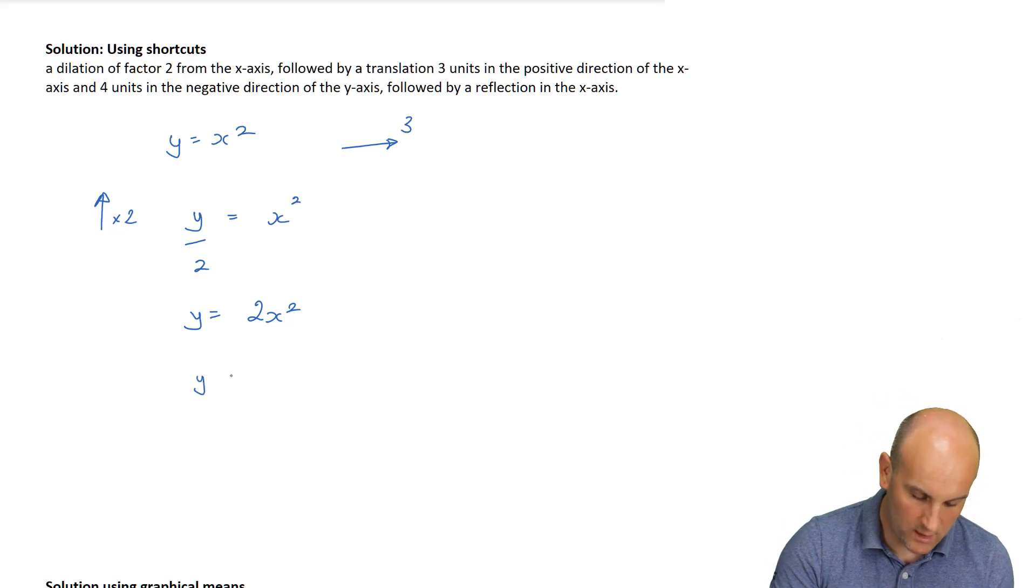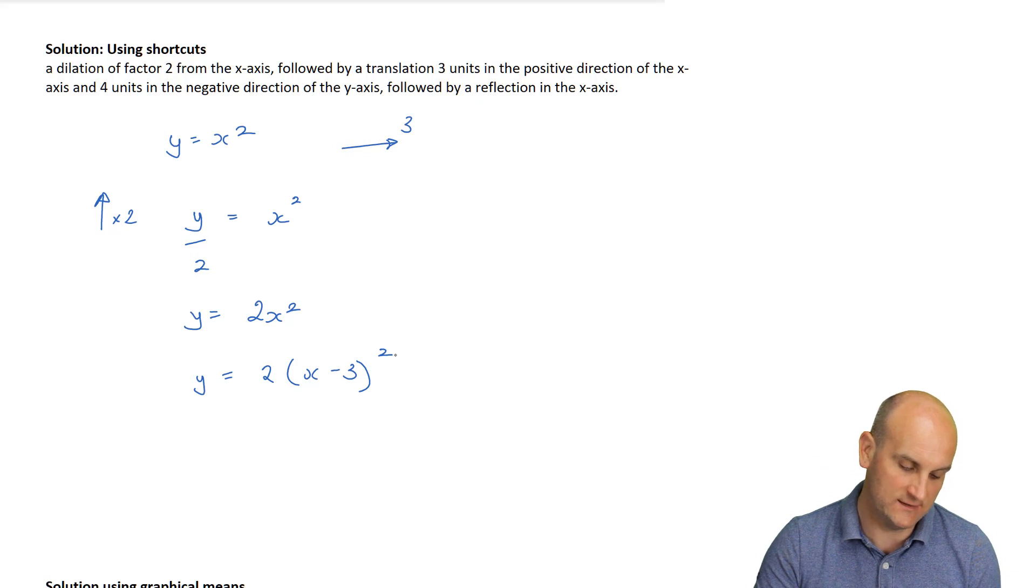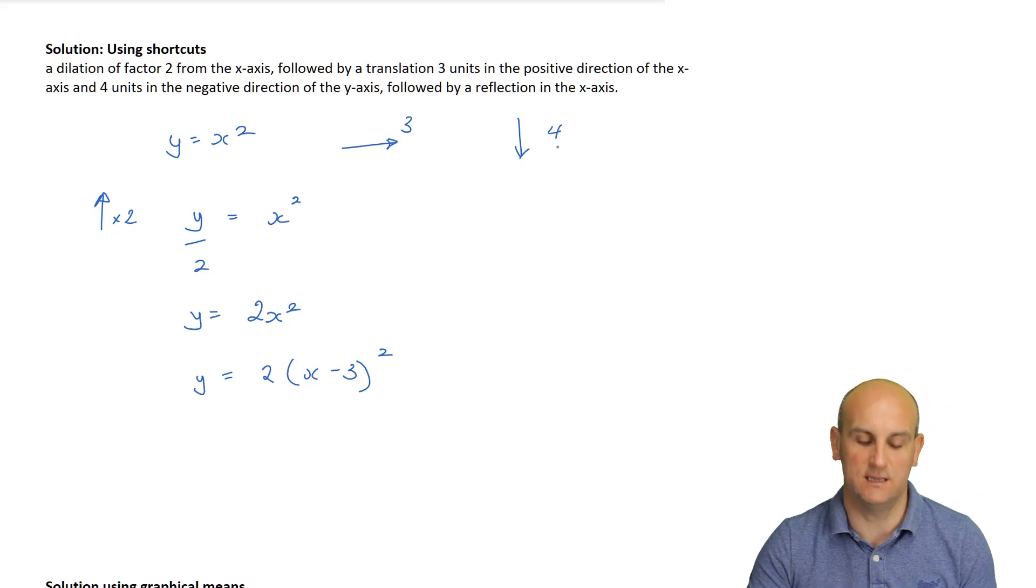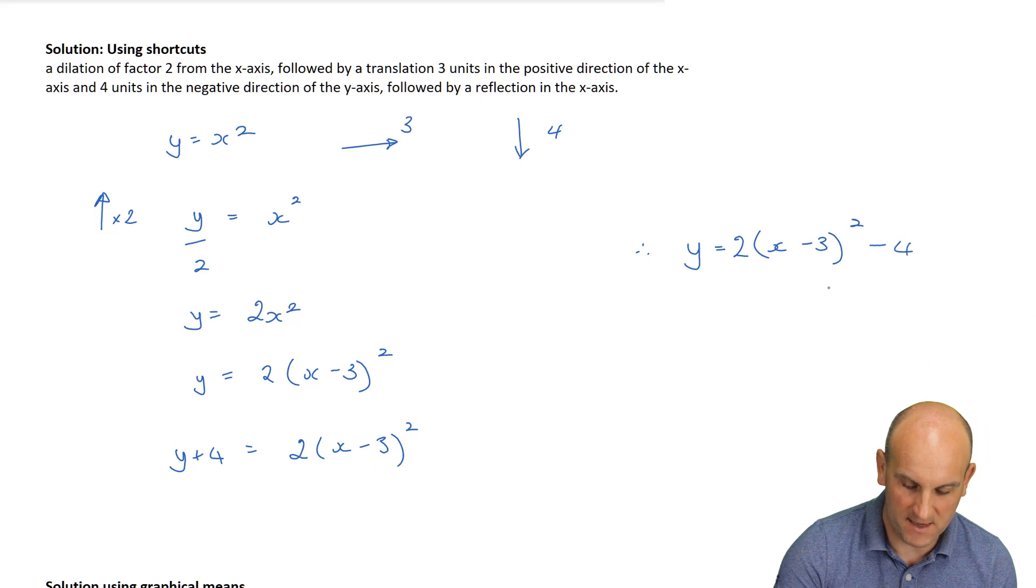So there we go. So y is equal to 2, where I see an x, I replace it with x minus 3. And there's my squared. So that's that one. And then what is it? Negative direction of the y-axis 4 units in the negative direction. So I replace a y with y minus the positive move. So that's y minus minus 4, which is y plus 4. So that becomes y plus 4 is equal to 2x minus 3 all squared. And then therefore, y is equal to 2 lots of x minus 3 all squared minus 4.